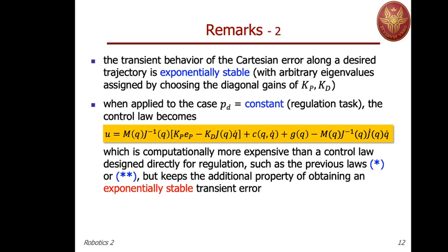The transient behavior is shaped through the proper choice of eigenvalues of the linear dynamics, made by choosing the diagonal gains Kp and Kd. In the case of a constant regulation task, feedback linearization still applies, and the only difference is that the desired acceleration P-double-dot vanishes and the velocity error term reduces to minus Kd times P-dot, which can be computed through the Jacobian as J(q) times q-dot. All the rest remains exactly the same. This regulation controller is clearly more complex to implement than the simpler PD-plus-gravity-cancellation laws seen earlier in the lecture.